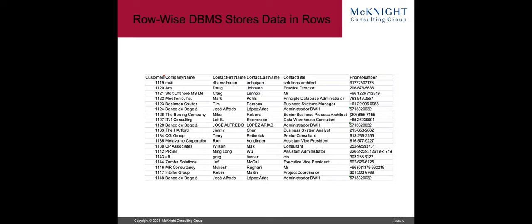Row-wise databases are what probably 99% of you are working on today. We usually don't even use the term 'row-wise' — we just say 'a database.' But truly, they store data in rows. Here you have some sample rows of a sample table — one, two, three, four, five, six columns. Even database professionals of multiple decades only know that the data is stored something like a select-star result.